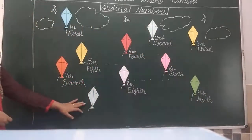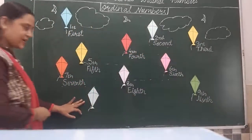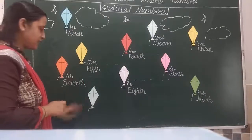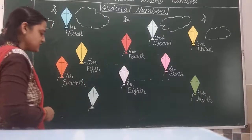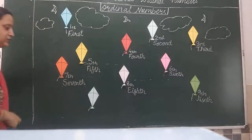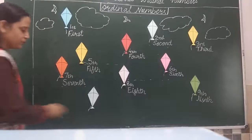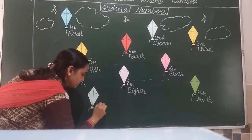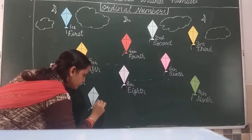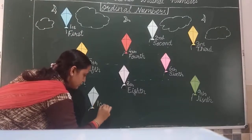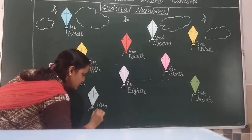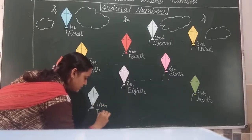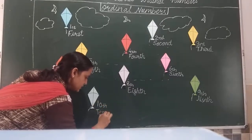This last kite is at the lowest position, so it is at the 10th position. P-E-N-T-H. 10th.